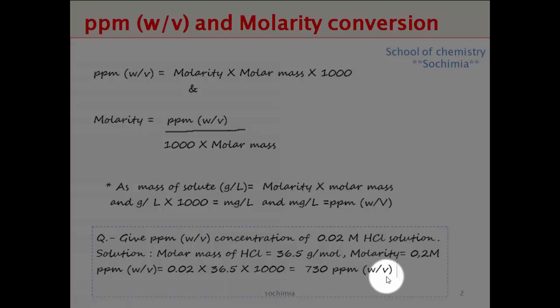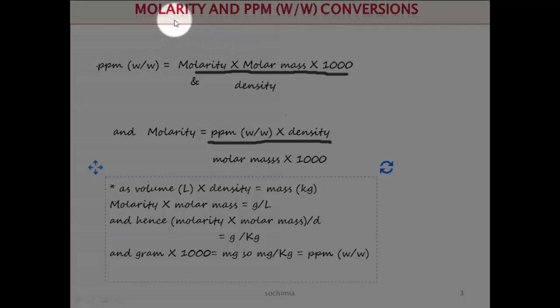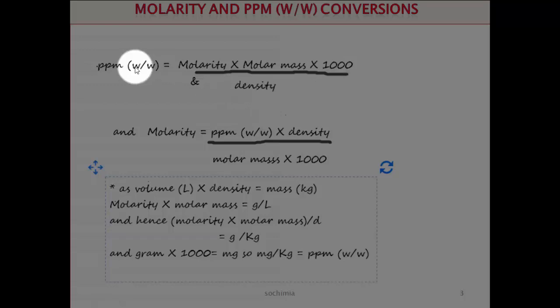This is how we can calculate molarity or parts per million weight by volume if the other term is given. Likewise, if we have parts per million weight by weight and want to convert it into molarity, we can use this formula. The only difference between this formula and the previous one is the density factor.